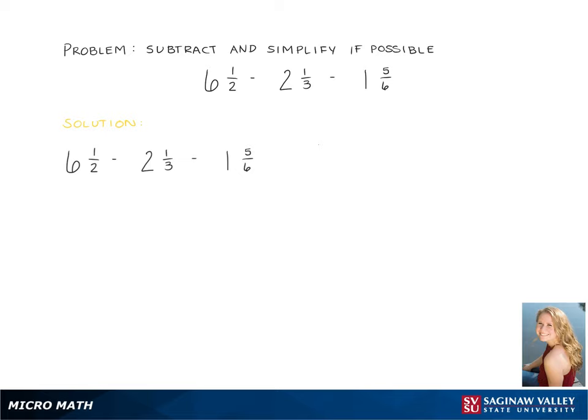Here we are going to solve the problem 6 and 1 half minus 2 and 1 third minus 1 and 5 sixth. So the first step in this problem is to change the mixed numbers into improper fractions.